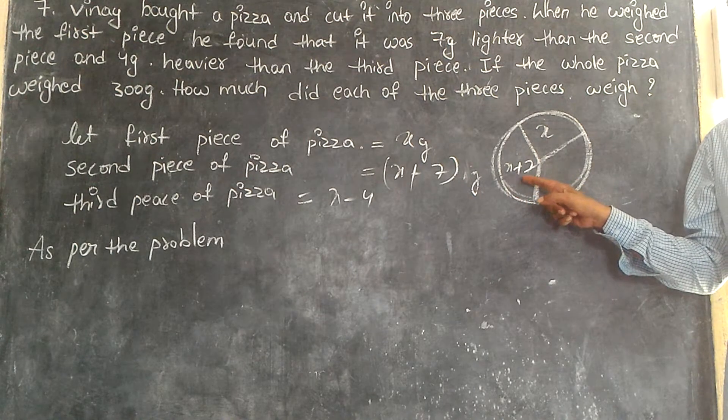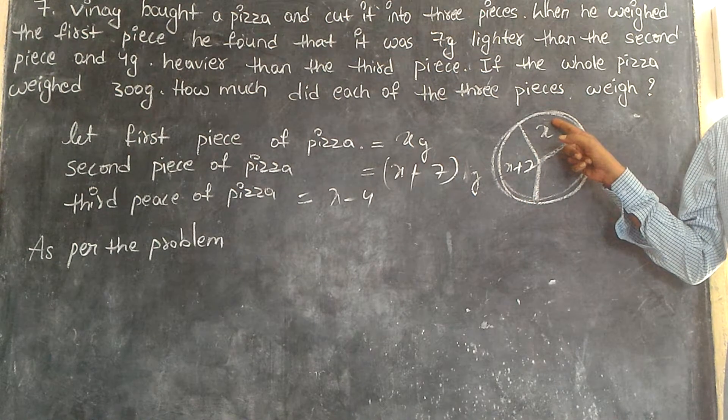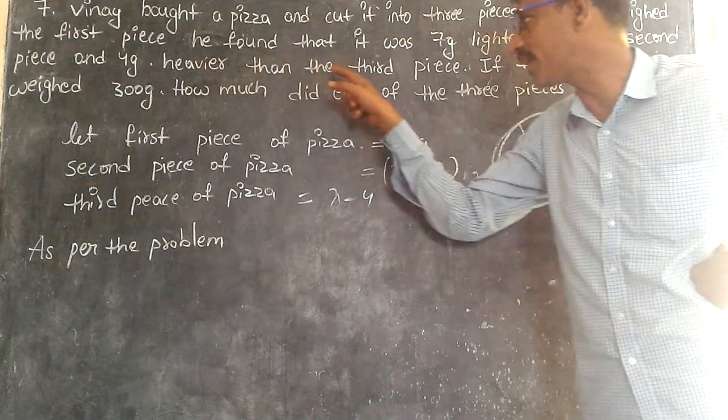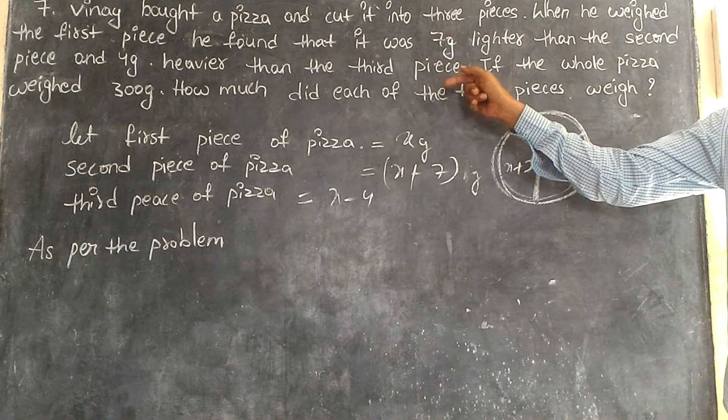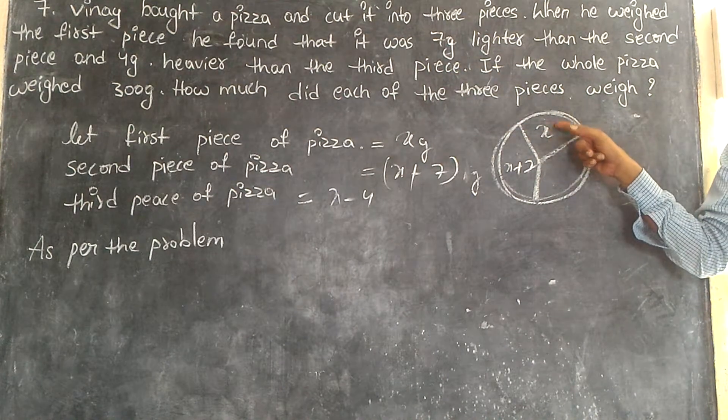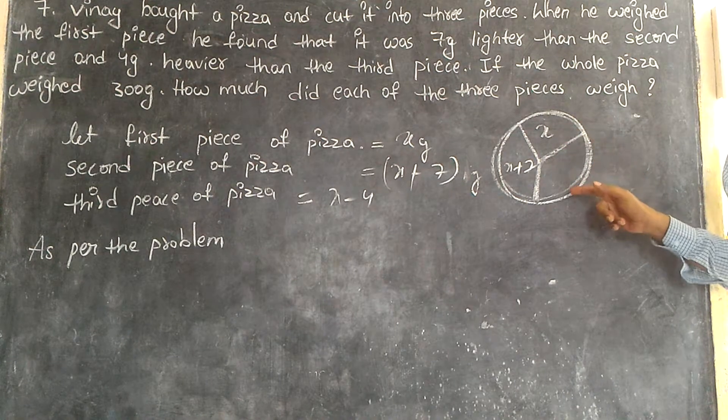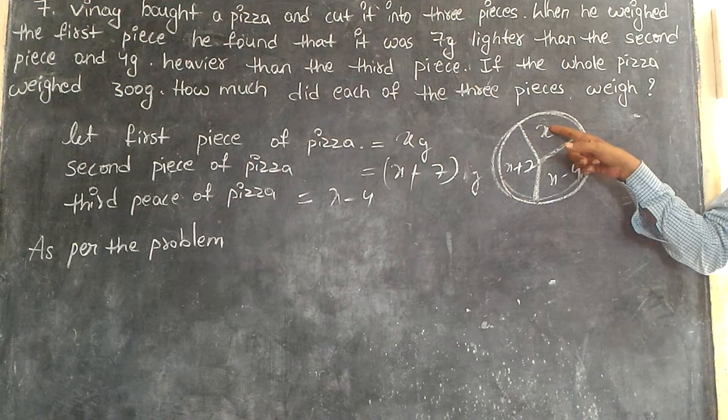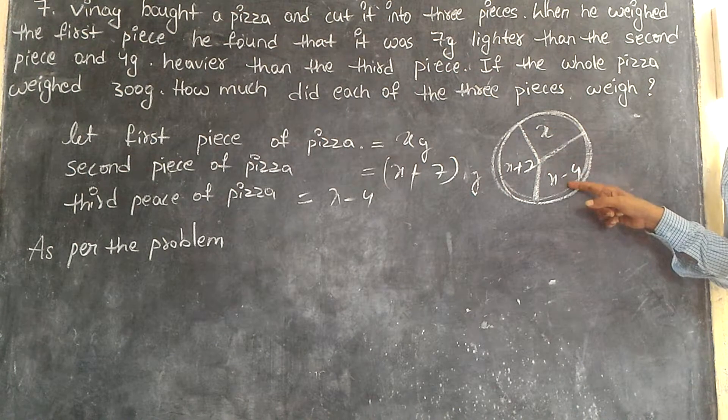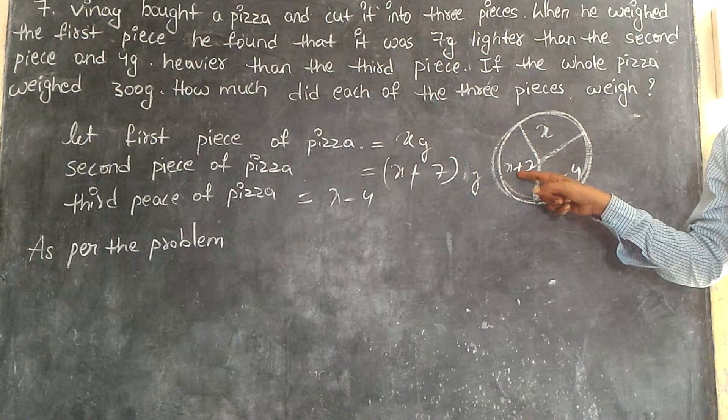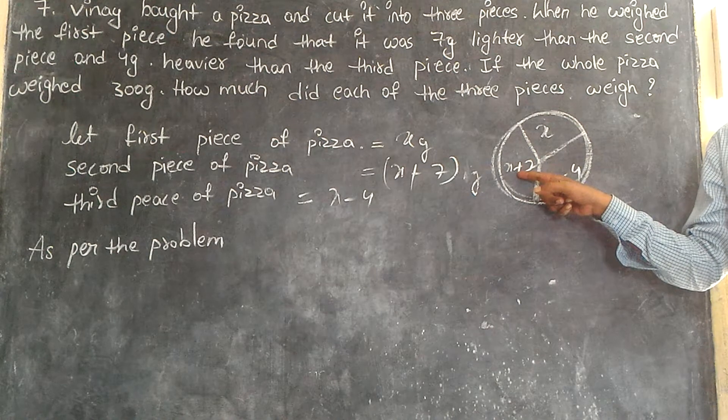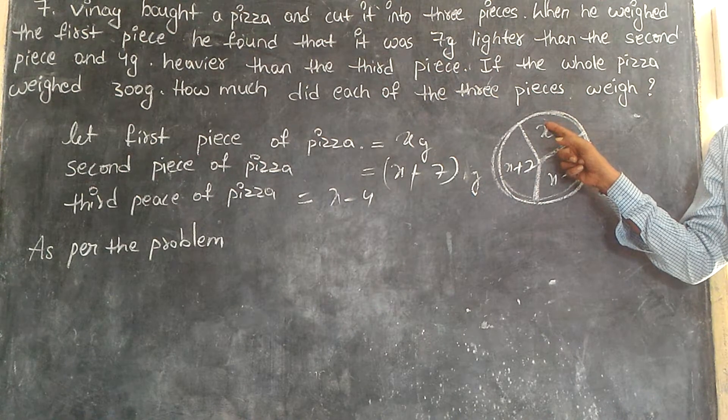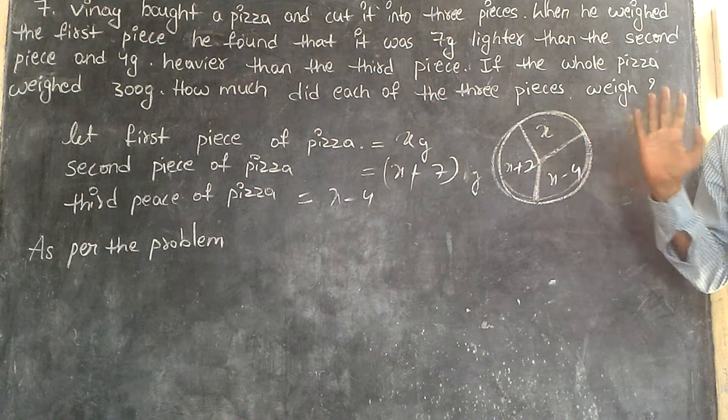Again, four grams heavier than the third piece. Can I take X minus four? Now, this is four grams heavier than this one. Seven grams lesser than the second piece. That means seven grams is less. Lighter than the second piece.